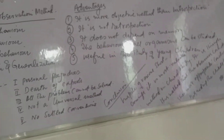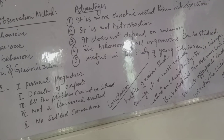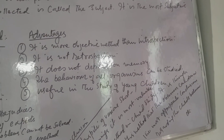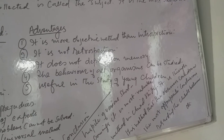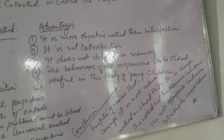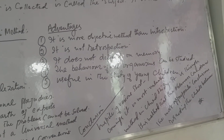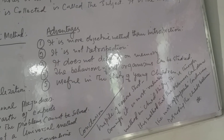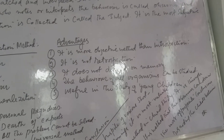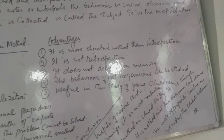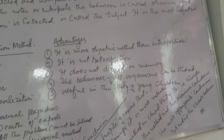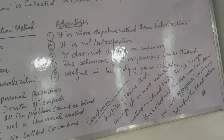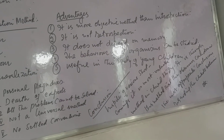Now, what are the merits or advantages of the observation method? Number one: it is a more objective method than introspection. This is the most suitable method; it can be usefully applied in child psychology, animal psychology, and abnormal psychology. Number two: it is not retrospection. This method does not depend on the past history or events; it observes the situation then and there, and the record of the observation is made on the spot. Number three: it does not depend on memory. The observer takes note of the behavior pattern side by side, and hence he does not need to depend upon memory or recall anything.